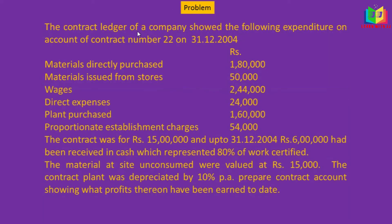We will see one problem. The contract ledger of a company showed the following expenditure on account of contract number 22 on 31/12/2004: Materials directly purchased — 1 lakh 80,000; Materials issued from stores — 50,000; Wages — 2 lakh 44,000; Direct expenses — 24,000; Plant purchased — 1 lakh 60,000; Proportionate establishment charges — 54,000. The contract was for rupees 15 lakh.